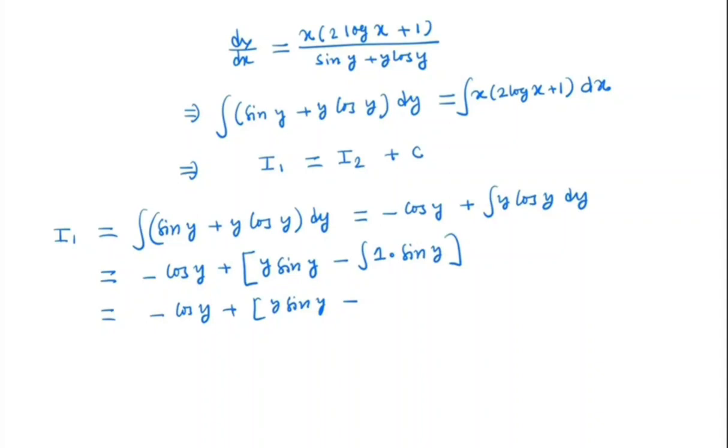So integral minus sin y is minus cos y. So minus minus gives plus here cos y. So this and this get cancelled, so we have here y sin y.